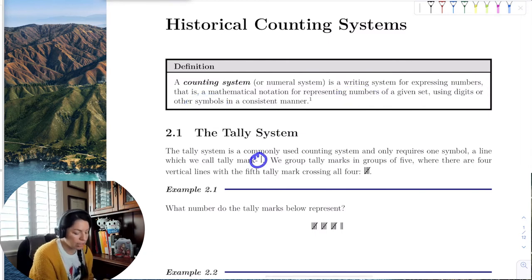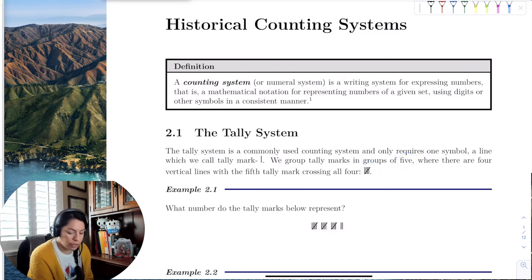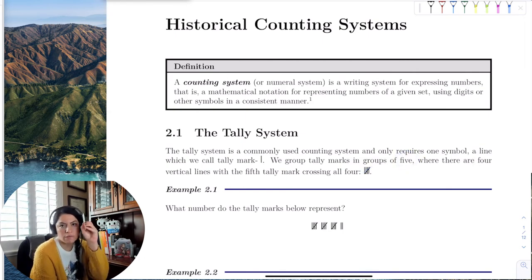One tally mark is marked by one line. But groups of five are marked differently, right? So when we use a tally system, we have four lines, and then the fifth line is a slash through it. It's not a vertical line, it's actually a diagonal line.